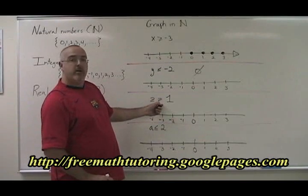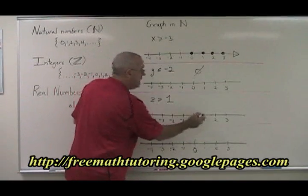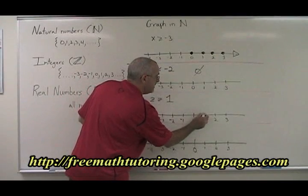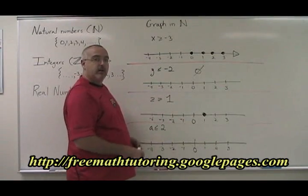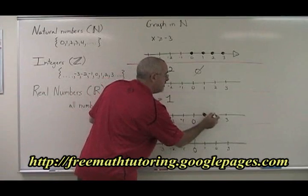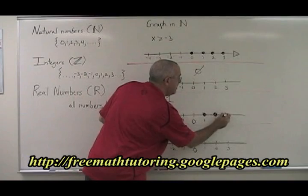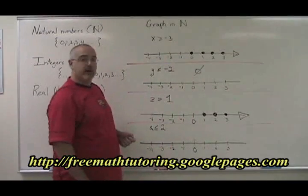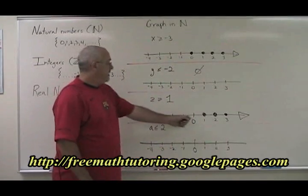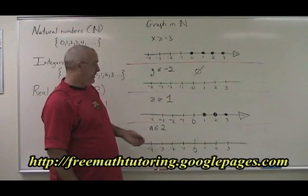a greater than or equal to one? Well, one is equal to one, so it has to be in our answer. And then all of the natural numbers that are greater than one also make this equation true. So I have one, two, three, and going on forever in the positive direction. Zero is not included in the answer because it is not greater than one and it is not equal to one.